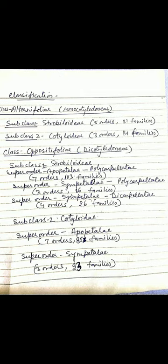Class Alternifoliae or Monocotyledonae is further divided into two subclasses. Subclass one is Strobiloidiae, which includes five orders and thirty-one families, and subclass two Cotyloidiae, which includes three orders and fourteen families.